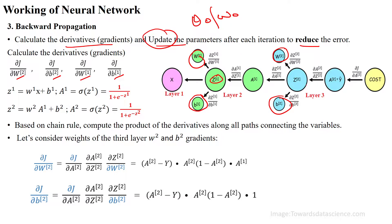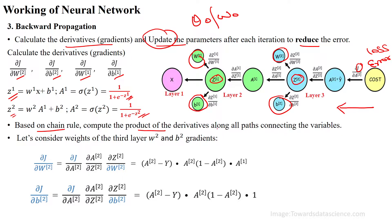In backpropagation, we move in the backward direction starting from the error or loss J. We already know that g1 = 1 / (1 + e^(−g1)) and g2 = 1 / (1 + e^(−g2)). Based on the chain rule, we can compute the product of derivatives along all paths of the given variables.